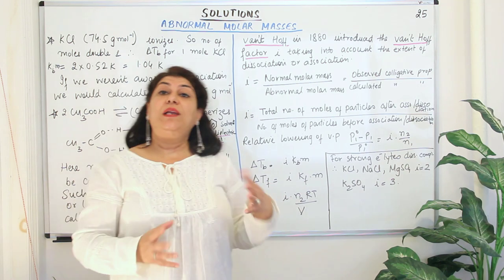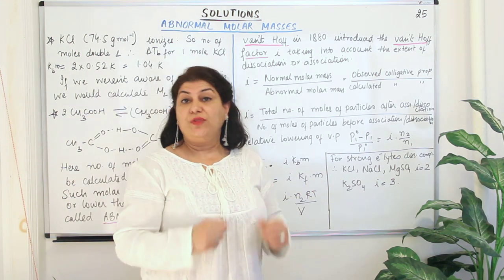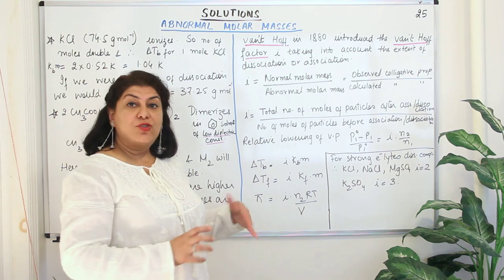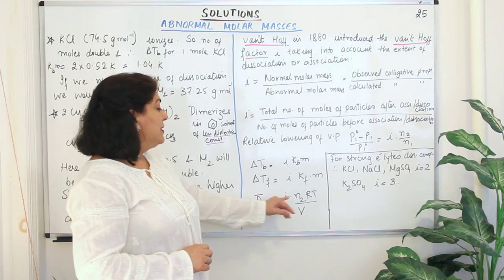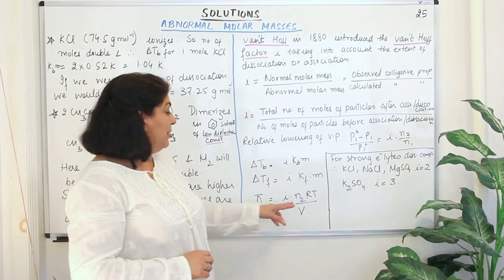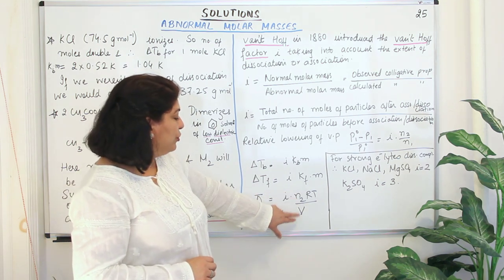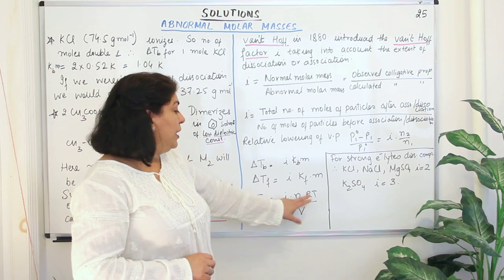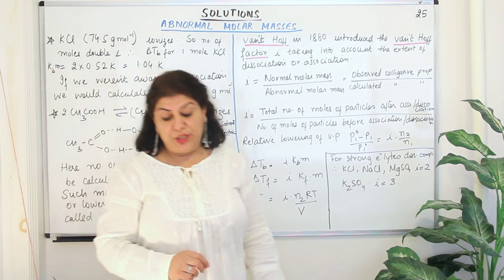Similarly, if you take ΔTf, that is the depression in freezing point, the formula for ΔTf is Kf × M, where Kf is the cryoscopic constant or the molal depression constant, and M again is molality, which represents the concentration of the solute. And π, that is osmotic pressure, is equal to C × R × T, where C is the molarity — number of moles of solute divided by volume of the solution — R is the gas constant, and T is the temperature.